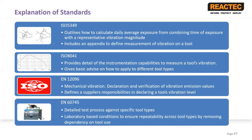ISO 8041 is the standard that provides the detail of an instrument's capabilities needed to make a measurement of a tool's vibration. It also gives some basic advice on how to apply the techniques to different types of tools. EN 12096 is a standard required to be followed by manufacturers of tools, defining how a manufacturer should declare and verify the vibration magnitude of their tools and their responsibilities in declaring that vibration magnitude level.